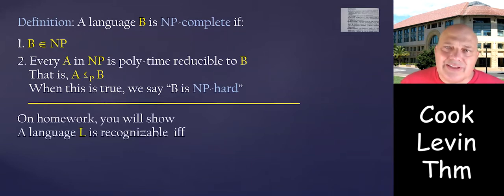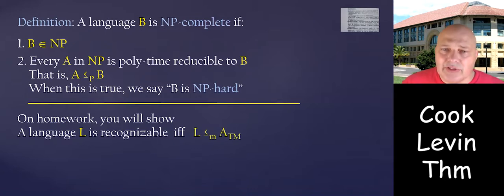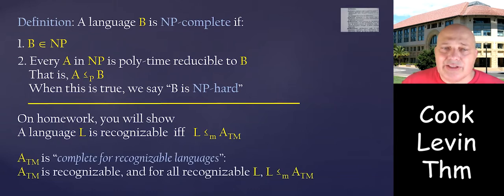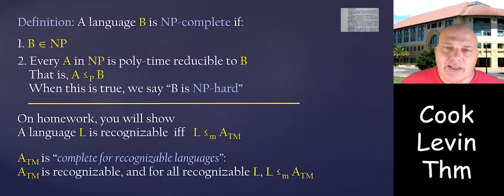We've already seen this notion of completeness implicitly when we discussed computability. In homework, you will show that language L is recognizable if and only if L is mapping reducible to ATM. So ATM is recognizable and every other recognizable language is mapping reducible to ATM. In this sense, ATM is complete for recognizable languages, and we will look at problems that are complete for NP.